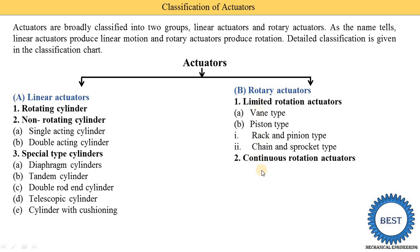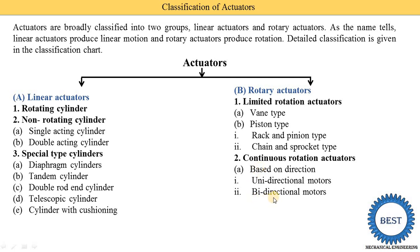The second category of rotary actuators is the continuous rotation actuator. First, classified based on direction of rotation: unidirectional means the motor rotates only in one direction — for example, if it rotates clockwise, it can only rotate clockwise and cannot rotate anti-clockwise. Bidirectional means the actuator rotates in two directions — clockwise as well as anti-clockwise — depending on which side the fluid or oil is supplied.